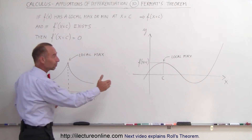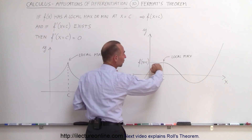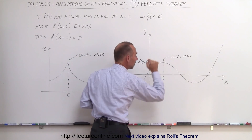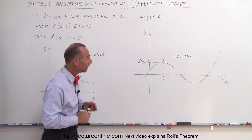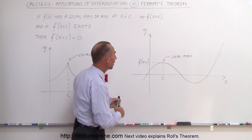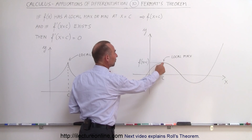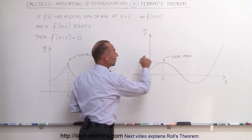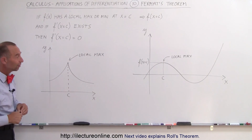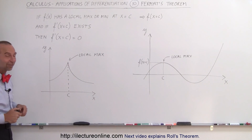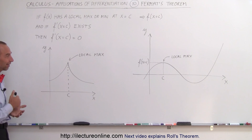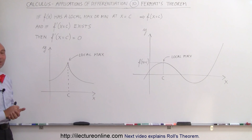It has to look something like this, where the derivative continues through that point, so the derivative actually does exist there, the function is continuous, and we can see that at that point, if this is a local max, therefore the slope there must be 0. And that is Fermat's theorem, and here's an example of why we need a theorem like that.